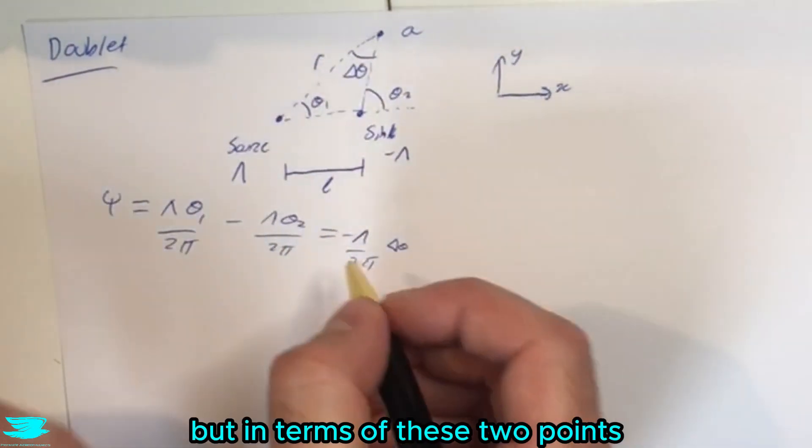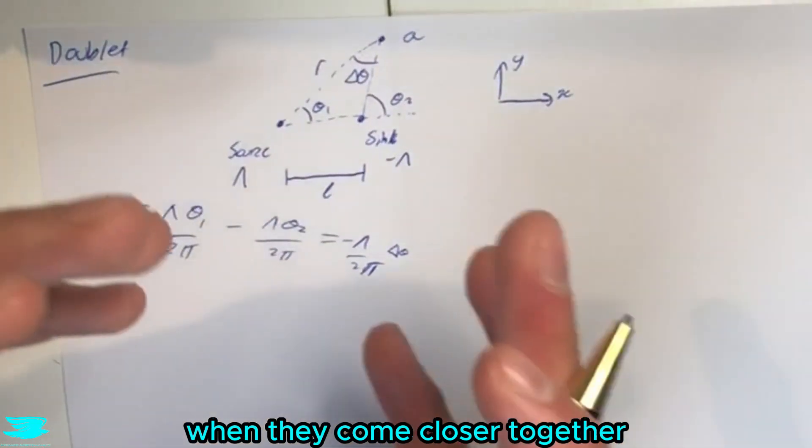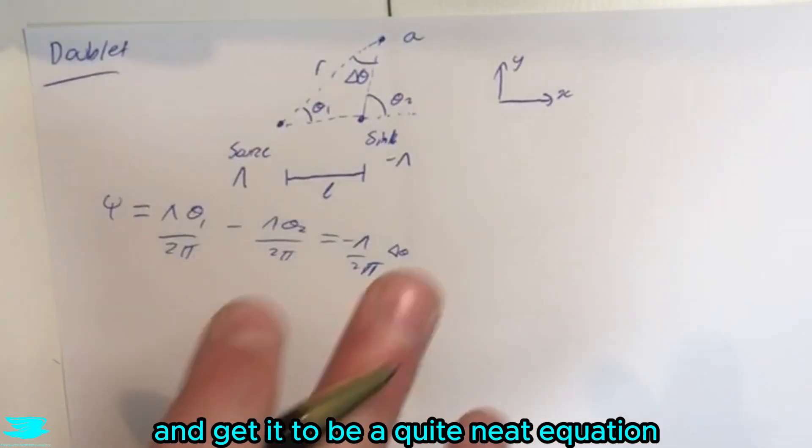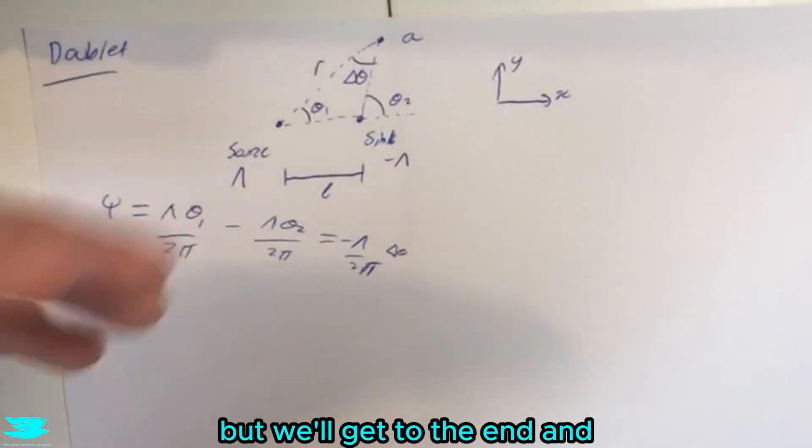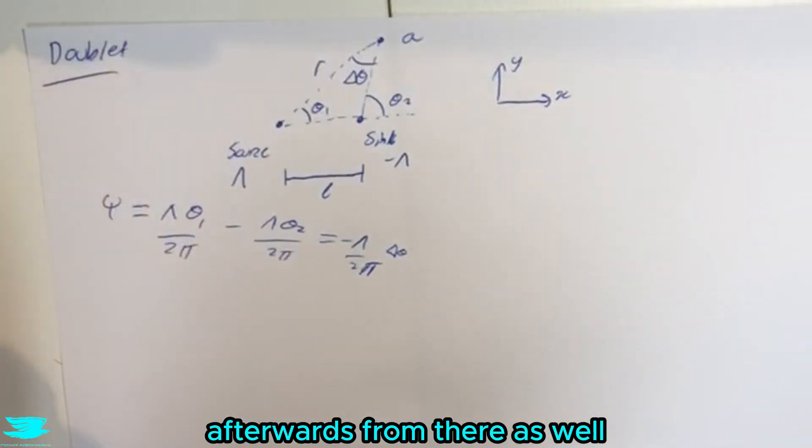So we just have the negative here to cancel out that to get back to theta1 minus theta2. So that's what simplifies to. But in terms of these two points, when they come closer together, we can actually simplify this equation even more and get it to be a quite neat equation. So first of all, we're going to have to go through some maths first, but we'll get to the end and it'll be a lot more crisper and then we can go to the Cartesian coordinates afterwards from there as well.